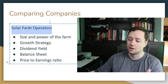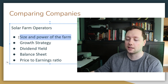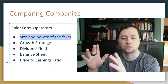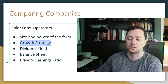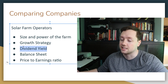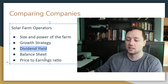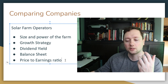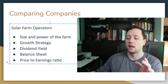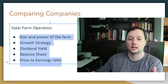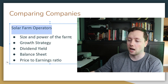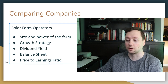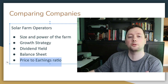Once you've narrowed to a sub-niche — say, solar farm operators — the number one factor I want to know right away is how big their current operations are and how much power their solar farm generates. After that: how quickly are they growing, what's their growth strategy, do they pay a dividend, do they have a healthy balance sheet and enough cash runway to support that dividend, and what is their price-to-earnings ratio for comparison? For a solar panel installation company, different metrics apply — like price-to-sales ratio — because they may not yet be profitable.